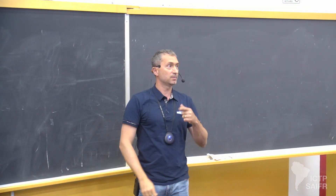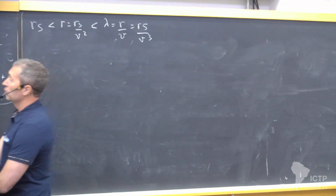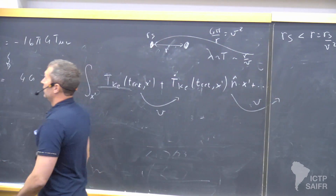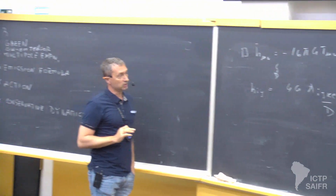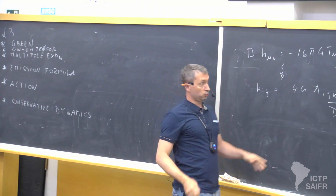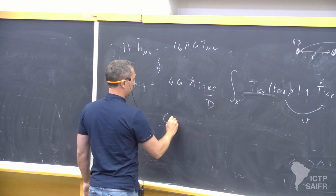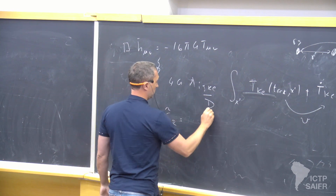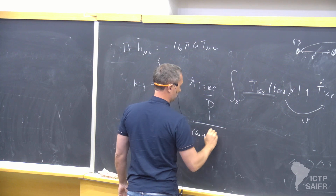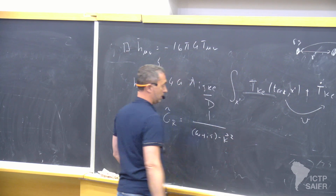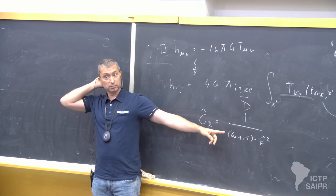This has been said many times, but let me stress it once more, because this is something you can never forget when you look at gravitational wave physics. So this is just a summary of what we did. We explicitly used the retarded Green function. The retarded Green function, if you go to Fourier space, it looks like this. You see some similarity with the Feynman Green function, but it's not quite the same.